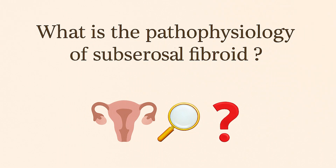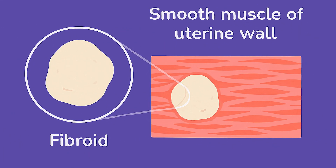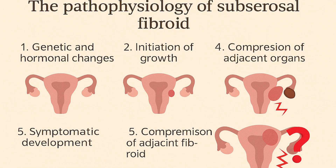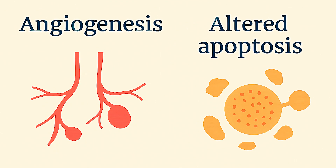Let's briefly talk about pathophysiology. Subserosal fibroids develop from a single muscle cell that undergoes transformation, whereby estrogen and progesterone stimulate growth by upregulating growth factors. These fibroids have increased extracellular matrix, contributing to their firmness. Angiogenesis and altered apoptosis also play roles in fibroids' persistence.